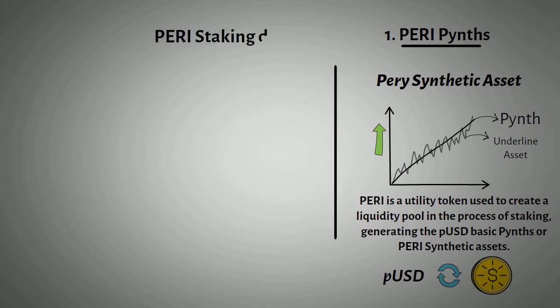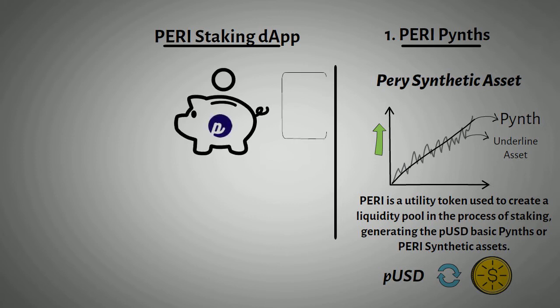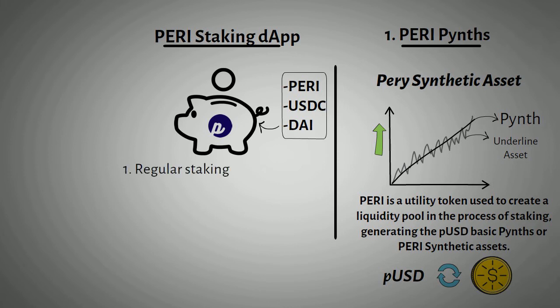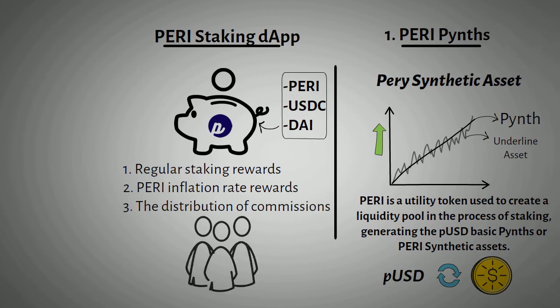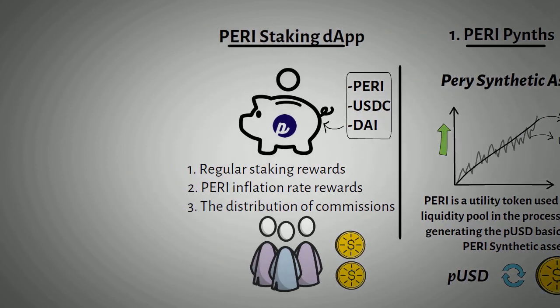The second is the Puri Staking DAP. Puri Staking DAP allows users to mint PUSD by staking Puri, USDC, and DAI. By staking Puri, holders will receive three different rewards: regular staking rewards based on a vesting plan, Puri inflation rate rewards, and the distribution of commissions incurred in PINTHs transactions and leveraged PINTHs contract trading. These will be distributed to stakers based on their contribution to the network.